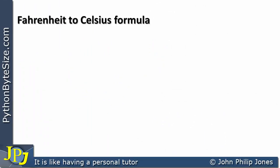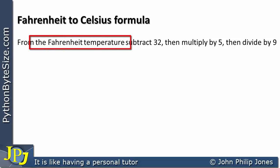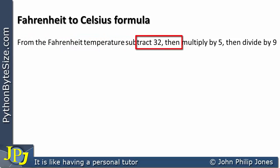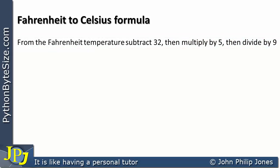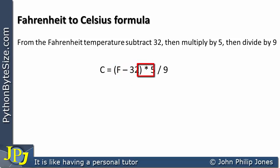Let's now turn our attention to how we perform the conversion of Fahrenheit to Celsius, and we need to consider an appropriate formula. Given the temperature in Fahrenheit, you subtract 32, then multiply by 5, then divide by 9, and this gives you the temperature in Celsius. The formula is: C = (F - 32) * 5 / 9, and this is exactly how it would look in Python.